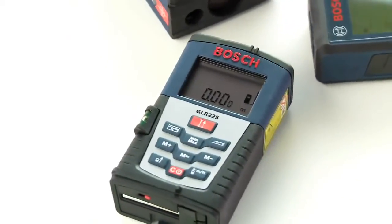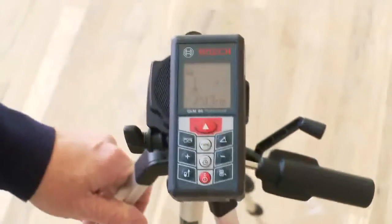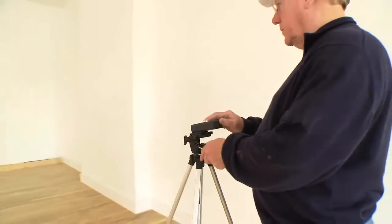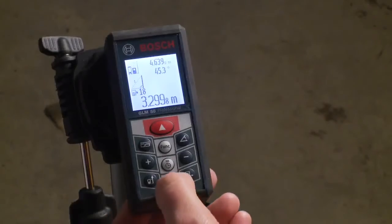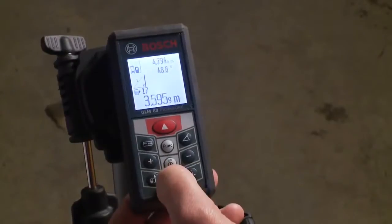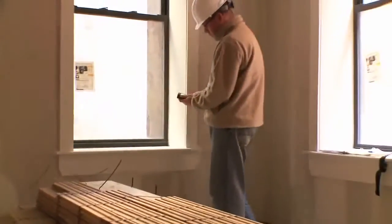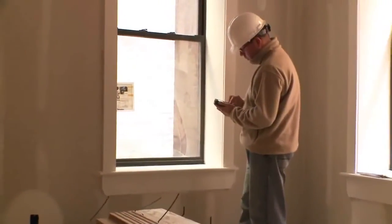As with all Bosch Laser Measurers, the GLM-80 has a full function keypad for calculating length, area and volume. It also has memory for storing measurements and is able to change the dimension display between feet, inches and metric.